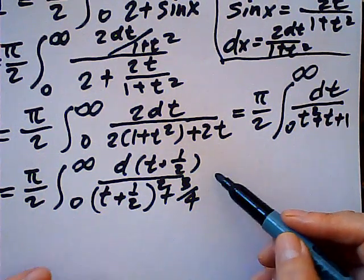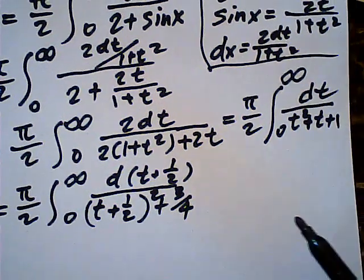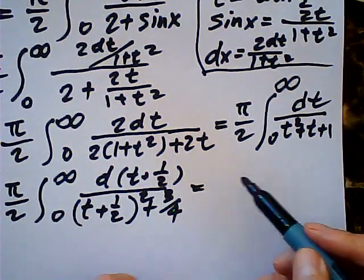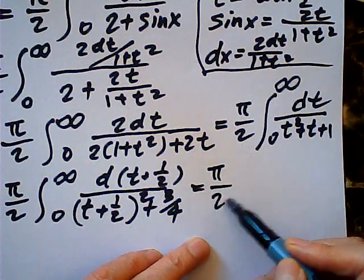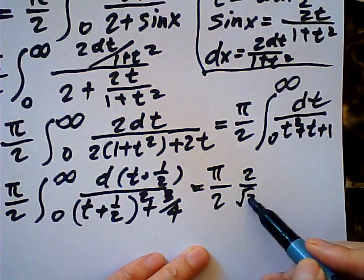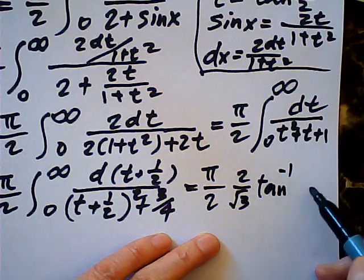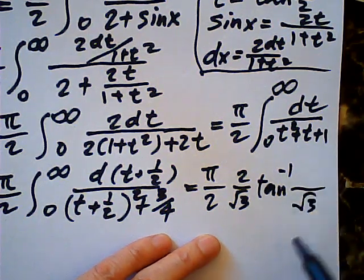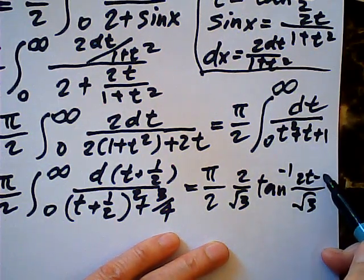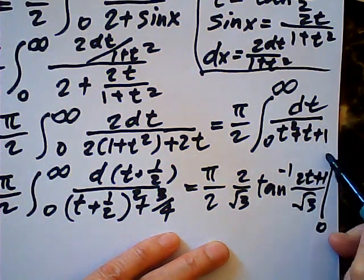Half pi, half. a is root three over two, arctangent two t plus one over root three. And from zero to infinity.